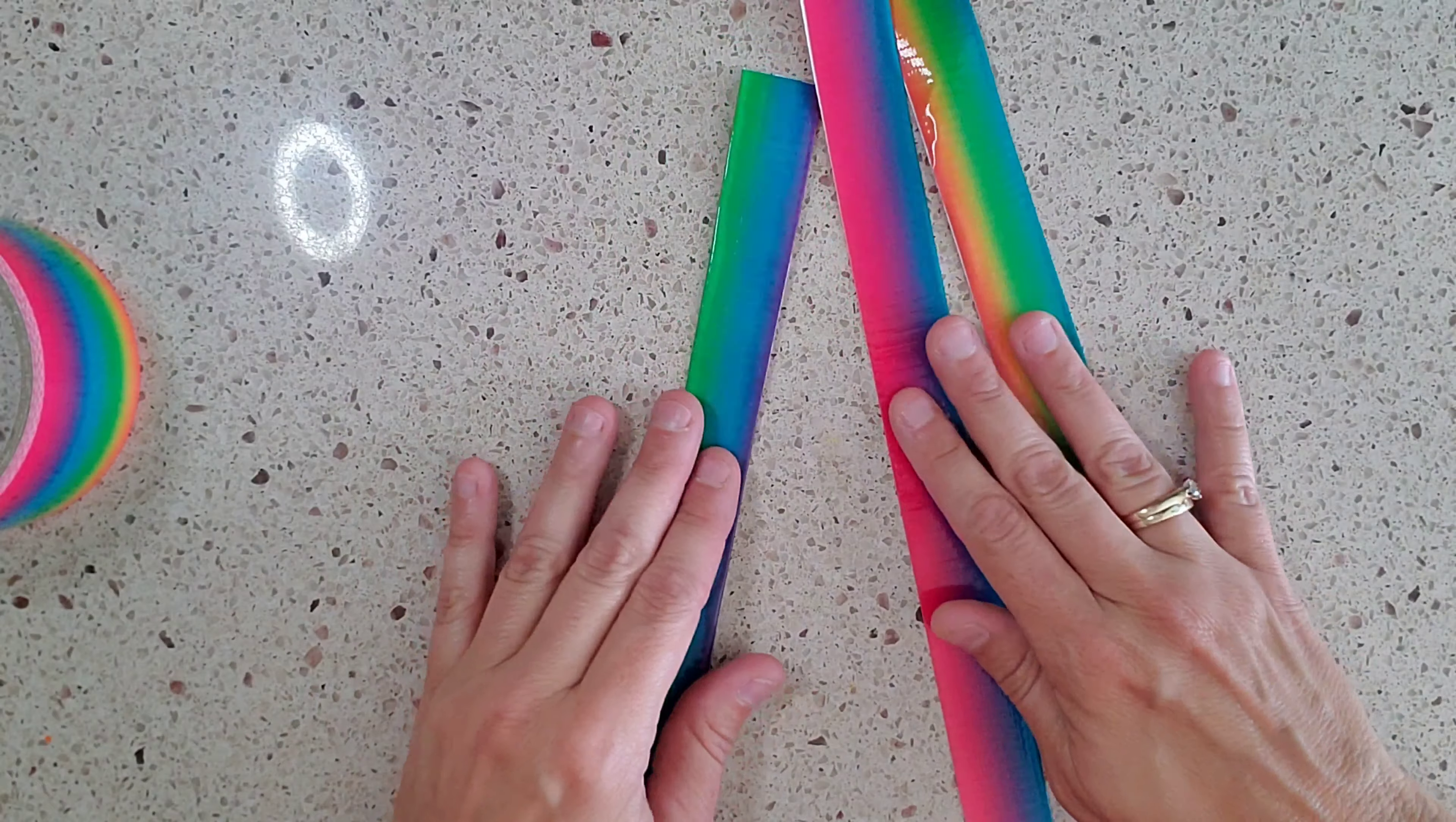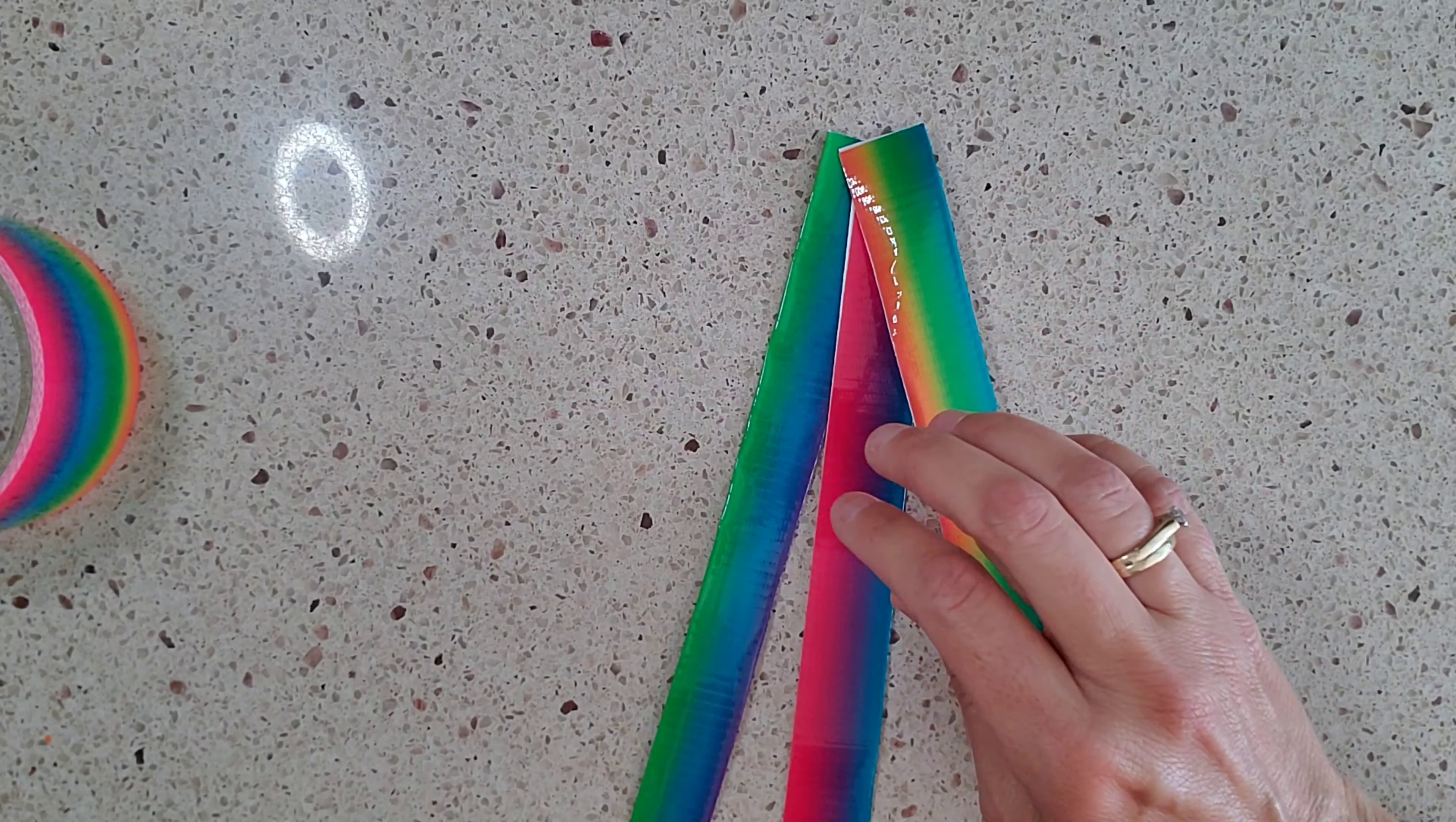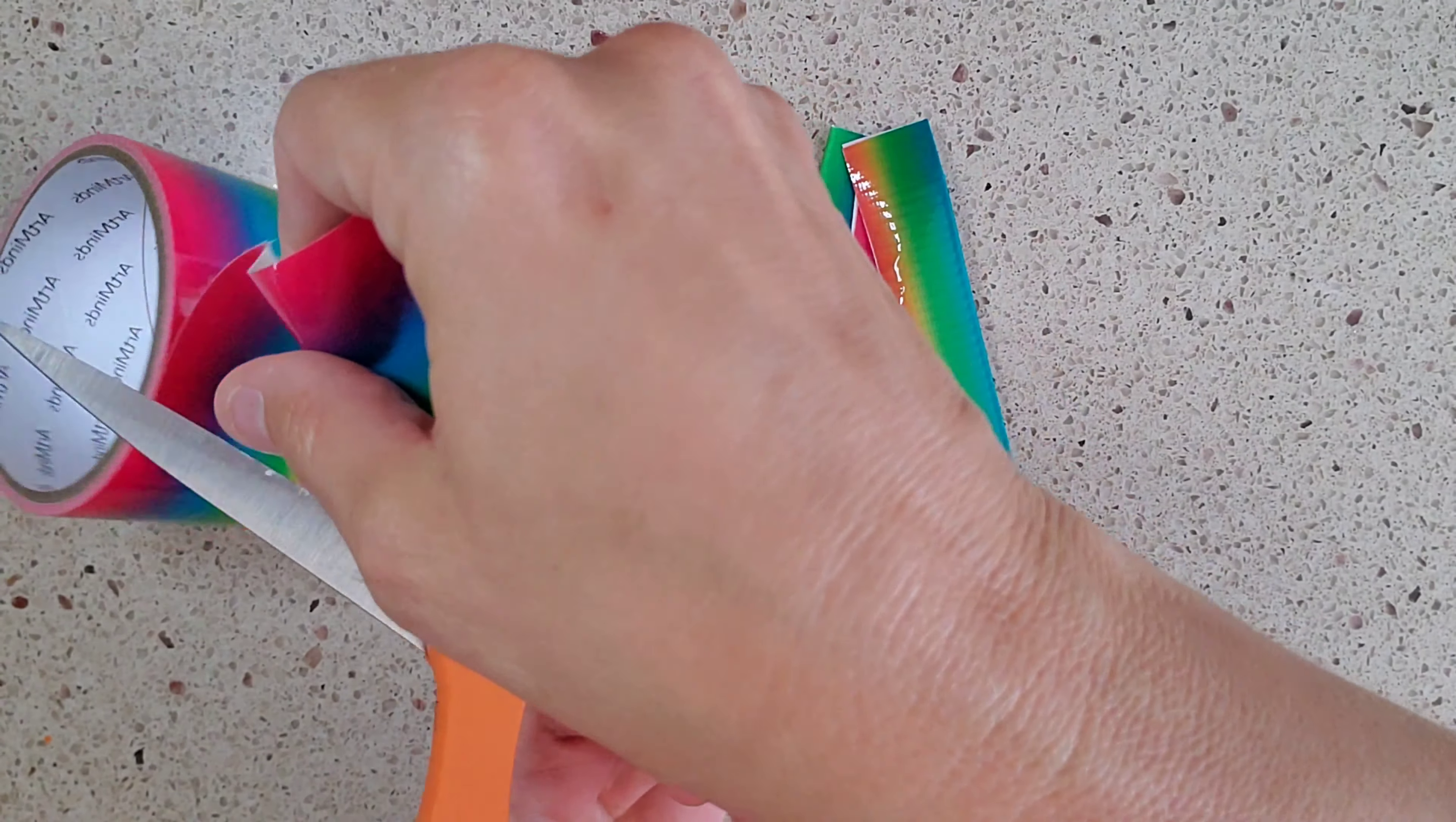And then what you do is you take your three strips and then you just put them on top of one another in the color combinations that you would like and then you're going to get a piece of duct tape. You can cut a little bit of a bigger piece just to kind of hold it down.